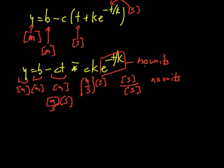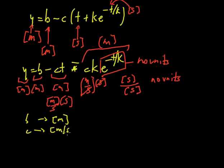So that means this whole thing has units of meters, so that checks out. In summary, b has to be a length measurement in meters, c has to be some kind of speed in meters per second, and k has to be seconds, some kind of time constant.